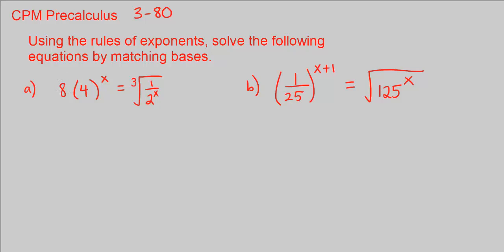In part A, we have to look at all of these terms. We have 8 to the power of 1 — I'm going to write that explicitly so we can see it — times 4 to the power of x, equal to the cube root of 1 over 2 to the power of x. The common base here is 2, because 4 can be represented as 2 squared, and 8 can be represented as 2 cubed, because 2 times 2 times 2 is 8.